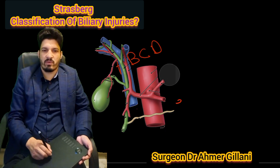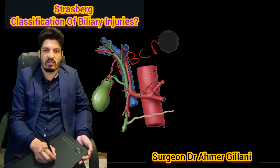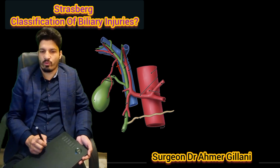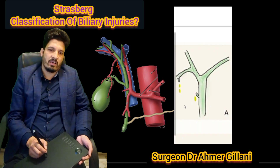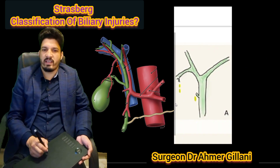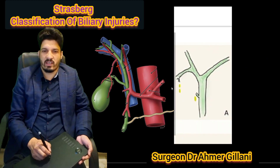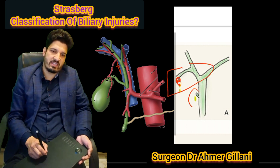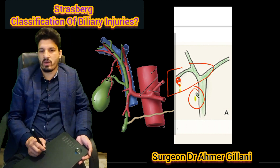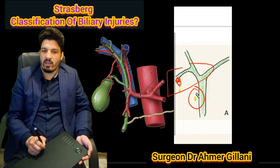I am going to explain one by one all the injuries. First of all, Type A — this is the bile leak from the liver bed. As you can see here, it originates from the liver bed or from the cystic duct, and this will be included in the Class A category.